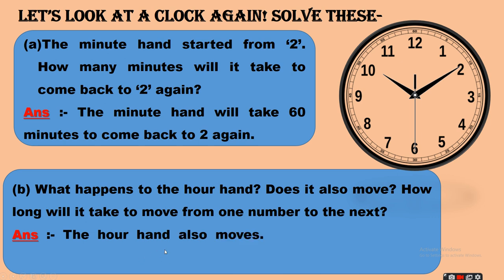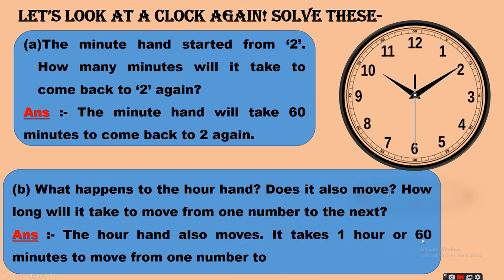Answer: the hour hand also moves. It takes 1 hour — 60 minutes — to move from one number to the next. The minute hand completes one full round before the hour hand moves from one number to the next.